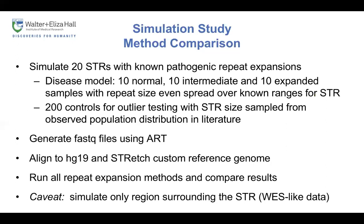For methods using outlier testing, we also generated 200 controls with STR sizes sampled from the observed population distribution drawn from the literature. We generated FASTQ data using ART with 60-fold coverage, aligned to hg19 as well as using Stretch to align to its custom reference genome. We ran all four repeat methods and compared results as the known simulated repeat size increases. One caveat is that we simulated only the regions surrounding the STR, so effectively this is WES-like data.